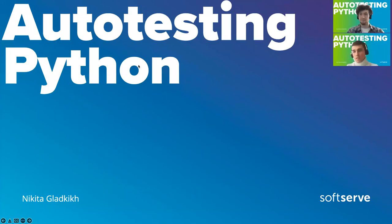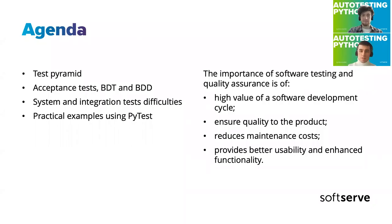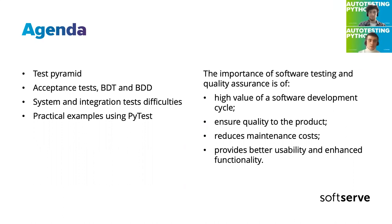What I want to tell you today is about autotesting in Python and how, in my opinion, it should be held and done. Today's agenda is: I'll briefly talk about test parameters in Python, about acceptance tests, behavior-driven testing, and behavior-driven development. Also about system and integration tests and difficulties we face when doing complicated testing using multiple system parts and crossing boundaries. I'll also show some practical examples using PyTest and a few other nice libraries.